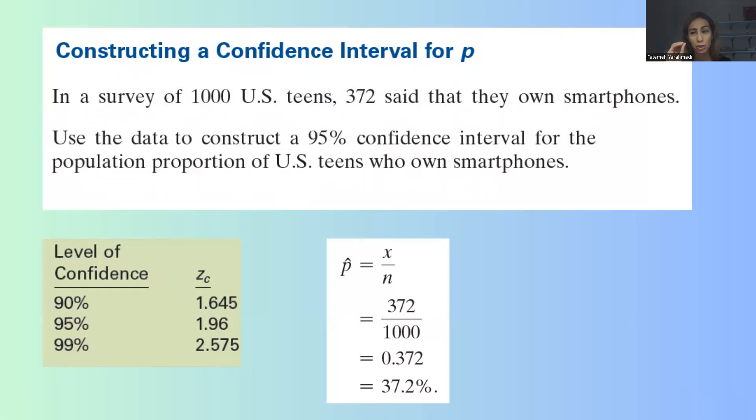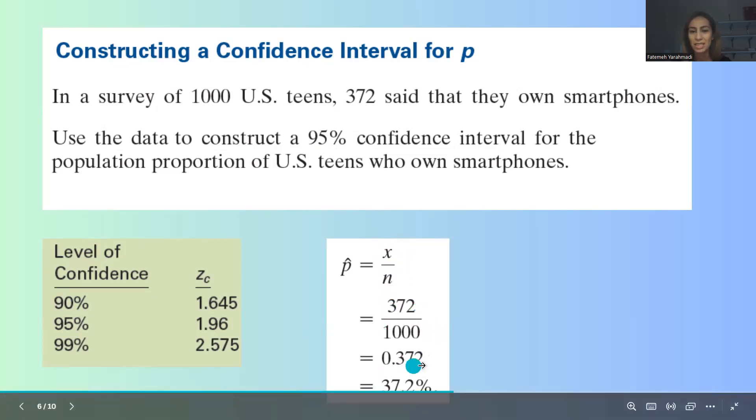Remember that we need to follow some important steps. We need to find p-hat. P-hat is the sample proportion, which is x divided by n: 372 over 1000, or 0.372, or 37.2%. If you want to use your calculator, I highly recommend you leaving it in decimal form because calculators don't understand percentage.